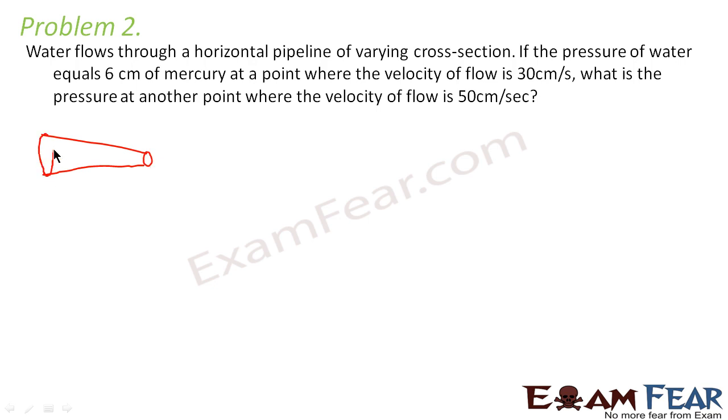So the cross-sectional area is different and it is a horizontal pipeline. If the pressure of water equals 6 cm of mercury at a point where the velocity of flow is 30 cm per second,